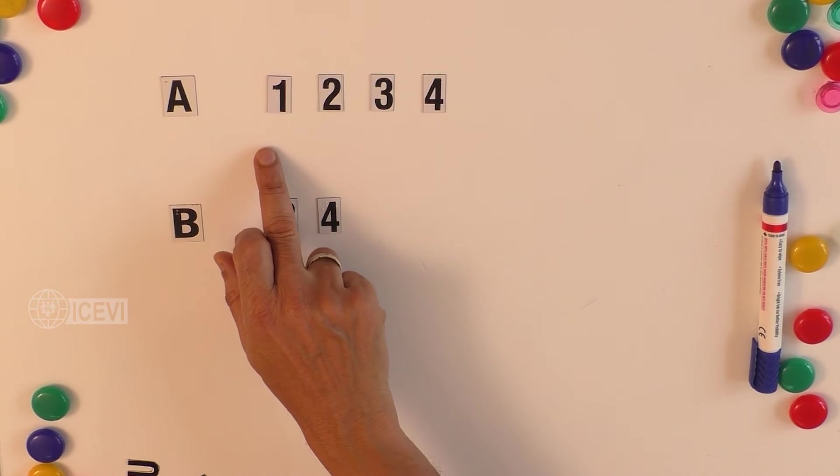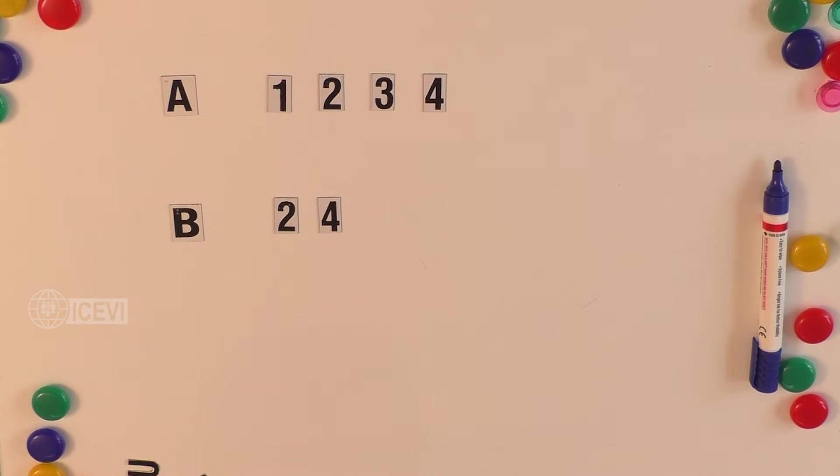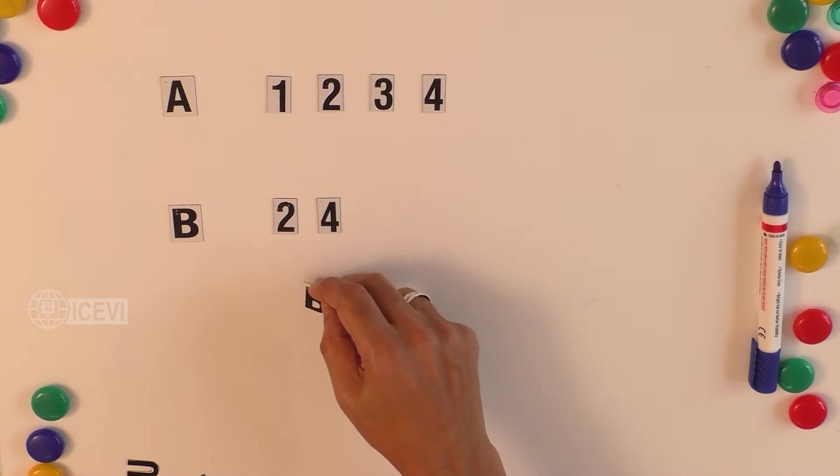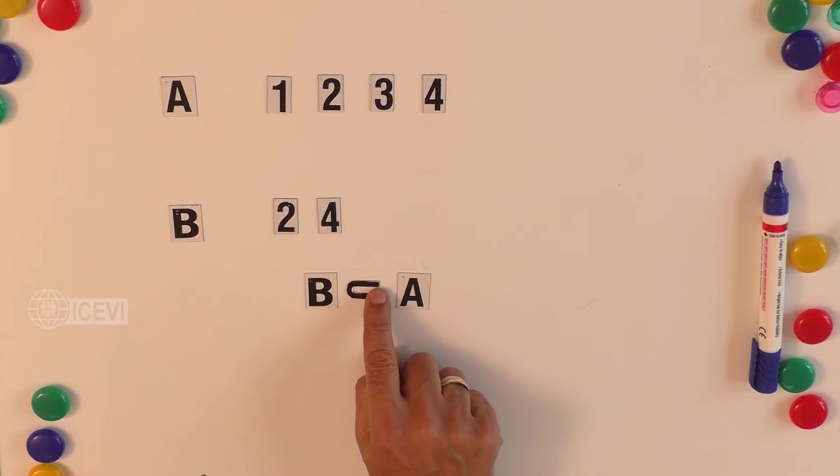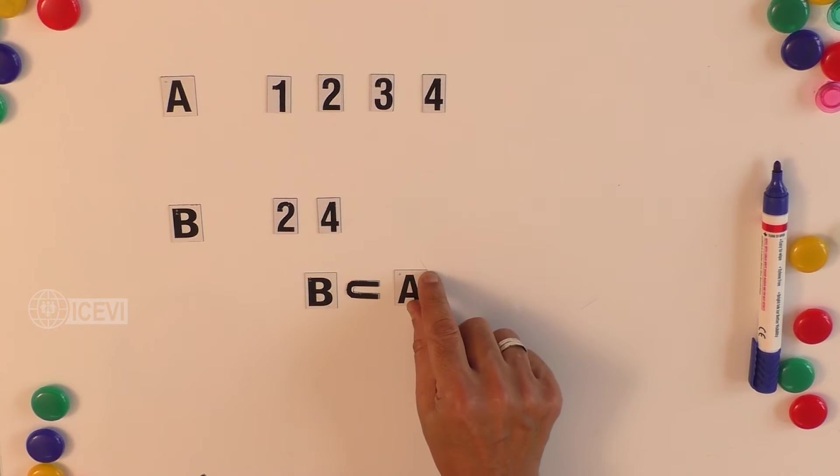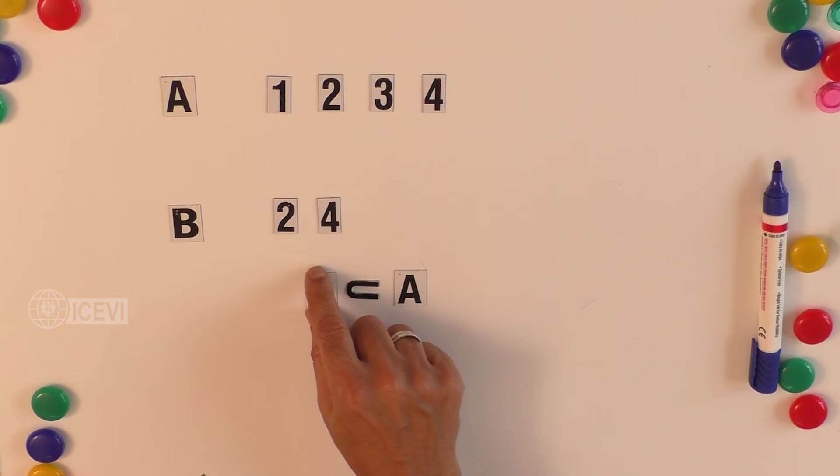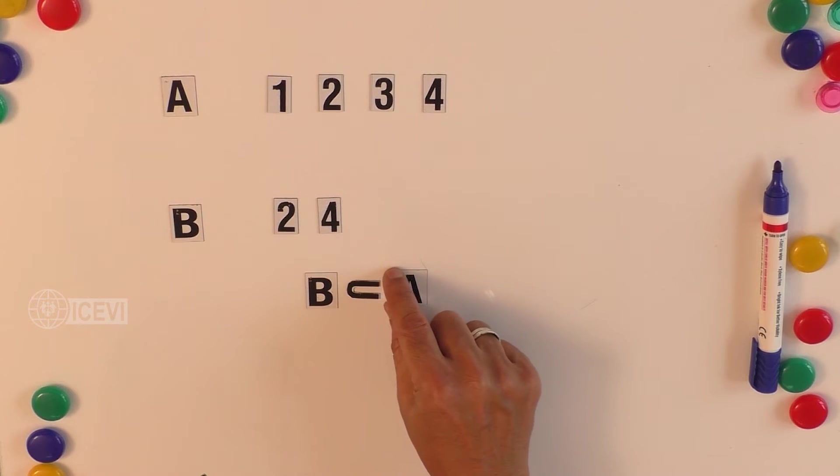That means we write B as a subset of A. The subset symbol is the horizontal U where the arms of the U are pointing out to the set which has more numbers. So here A has four elements, B has two elements, so B is a subset of A. Now the set A can also be called the superset.